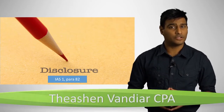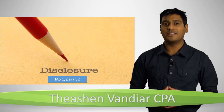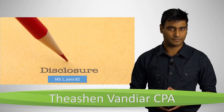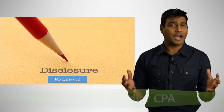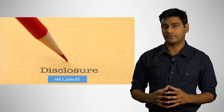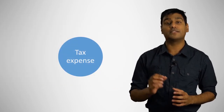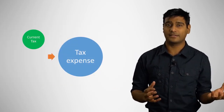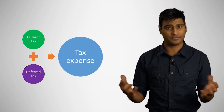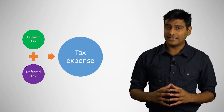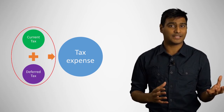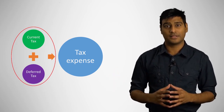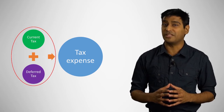IAS 12 paragraph 82 requires tax expense to be separately disclosed in the statement of profit and loss. Tax expense comprises two components: current tax and deferred tax expense. Tax expense is the sum of current tax expense and deferred tax expense.